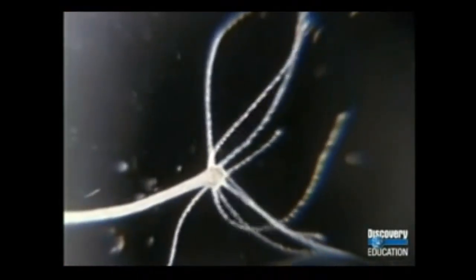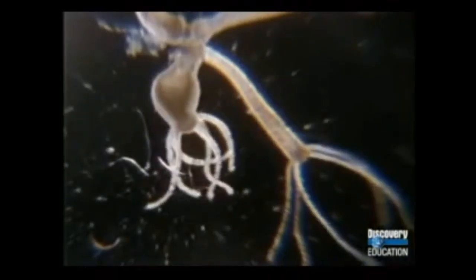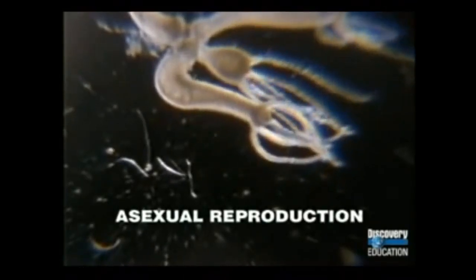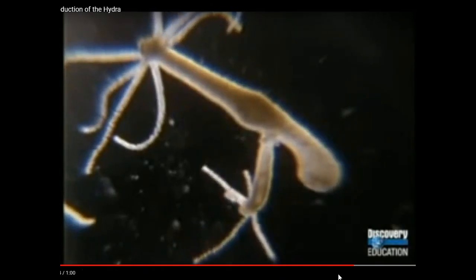A hydra is a microscopically small animal that lives in freshwater ponds and damp places. It is a simple animal with a tubular body and tentacles that it uses to catch small prey. A hydra does not need a mate to reproduce — it can reproduce by itself, which is called asexual reproduction. The hydra reproduces by growing a young hydra from its side.